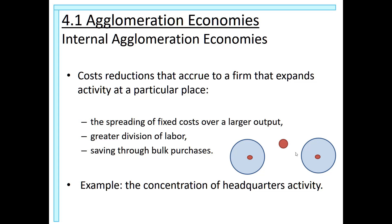Also, if you are bigger, you can buy materials in bulk, which usually incurs savings. An example would be the concentration of headquarters activity. So that is our first source of agglomeration economies — internal agglomeration economies. Agglomeration economies not only come from economies of scale external to the firm; they can also come from economies of scale that are internal to the firm.